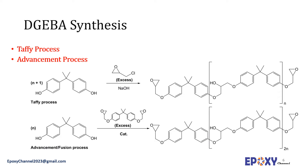Higher molecular weight diglycidyl ethers (n > 1) are formed by the reaction of bisphenol A diglycidyl ether with further bisphenol A. This is called pre-polymerization. A product comprising a few repeat units, for example n = 1 to 2, is a viscous clear liquid — these are called liquid epoxy resins. A product comprising more repeating units, for example n = 2 to 13, is a colorless solid at room temperature, referred to as solid epoxy resin.